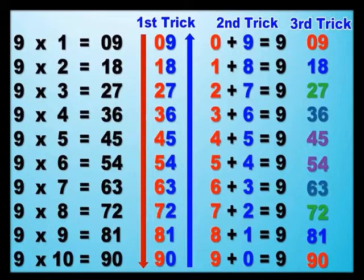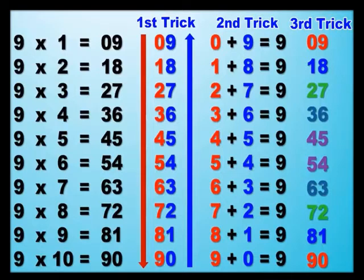You can see over here — nine times one, you have zero in the tens and nine in the units. Nine times two — one in the tens and eight in the units. It goes: units are nine, eight, descending. And then the tens digits are ascending. So you can see it: red color for tens and blue color for units.